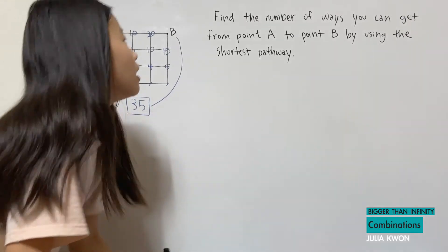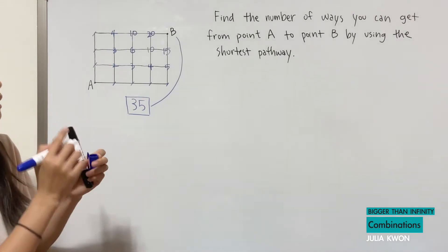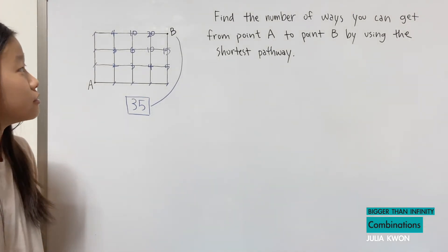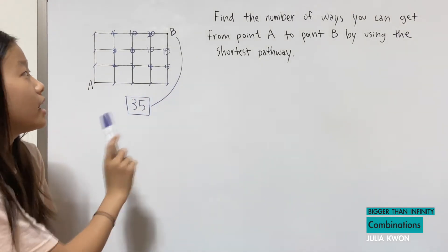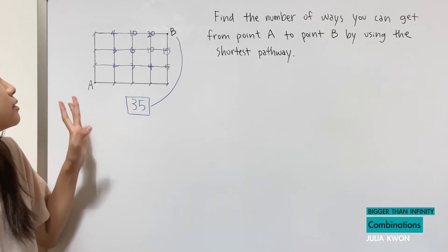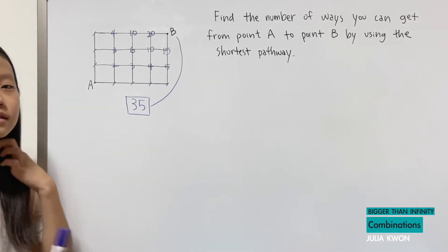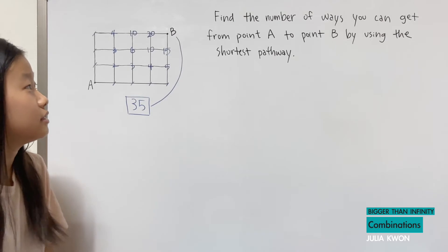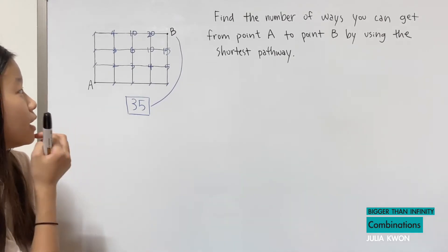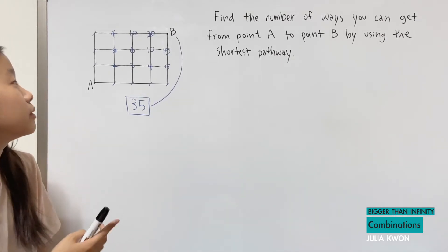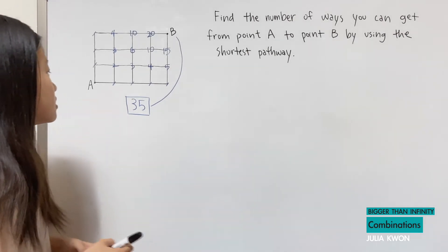Now, if we had more squares and we were trying to find the number of ways to get from point A to point B, this counting method wouldn't be the best option. The next way to find the number of ways will be a little bit faster.